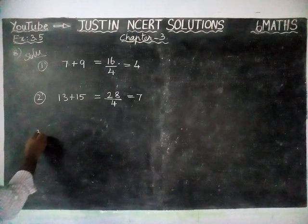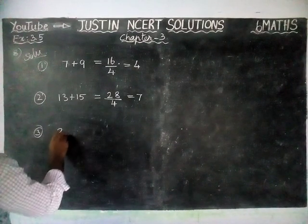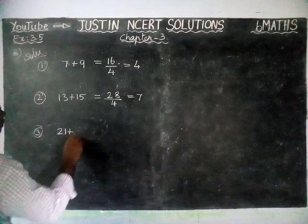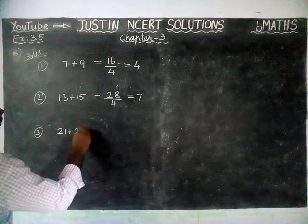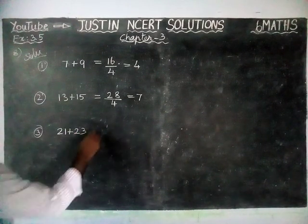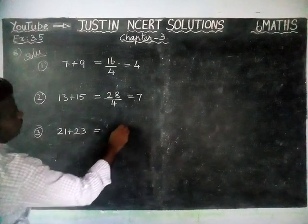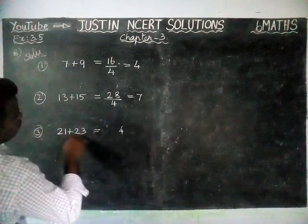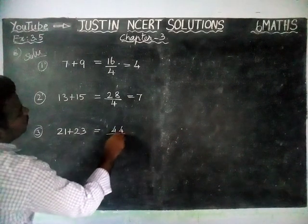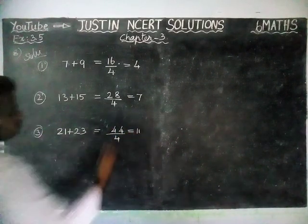Next, we will check the third example: 21 plus 23. These are two consecutive odd numbers. 21 plus 23 is equal to 44. 44 is divisible by 4.